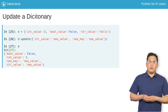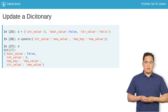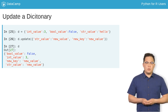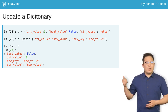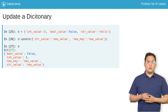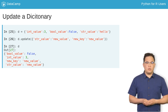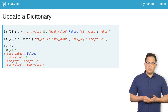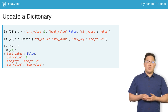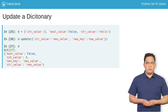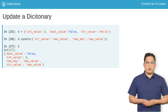For dictionaries, you can call the update method. Note the dot notation to call the method. You pass update a dictionary of key-value pairs. If the keys already exist, they will be updated with the new value. If not, new keys will be added to the dictionary.